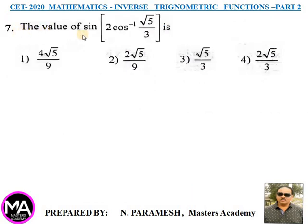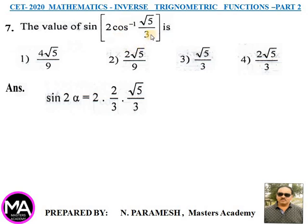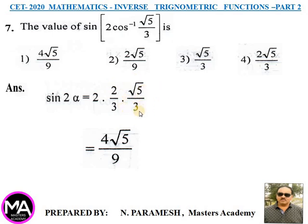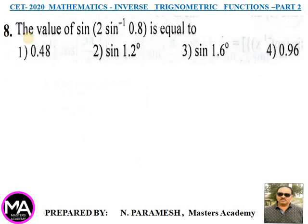Question 7: Find sin(2cos⁻¹(√5/3)). Answer: Let cos⁻¹(√5/3) = α, so cosα = √5/3 and sinα = 2/3. Then sin2α = 2sinα·cosα = 2·(2/3)·(√5/3) = 4√5/9. Option 1 is correct.